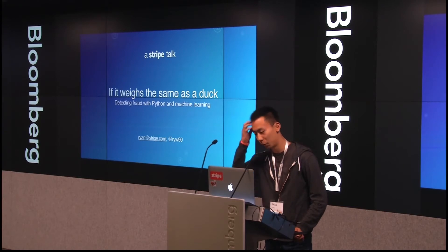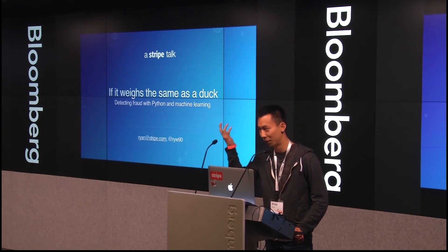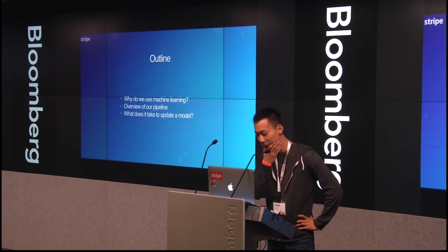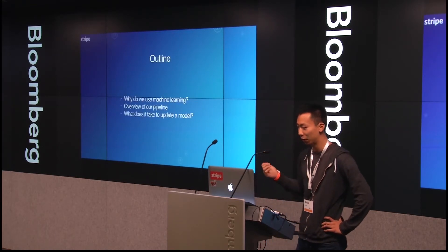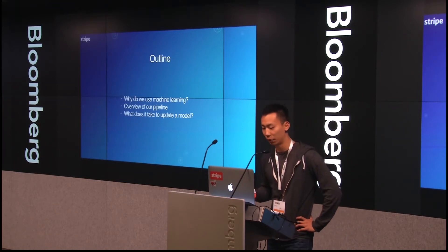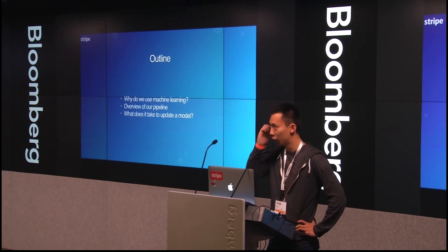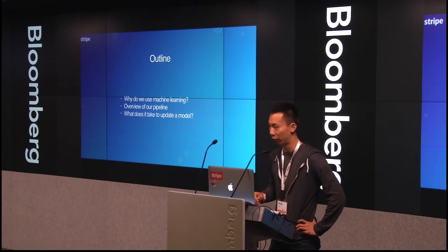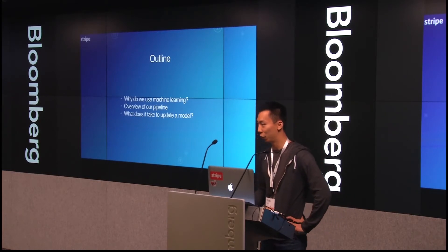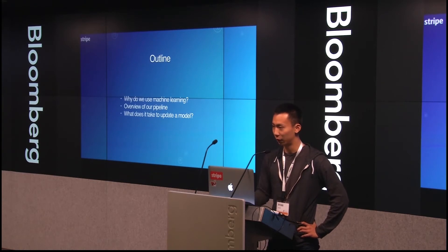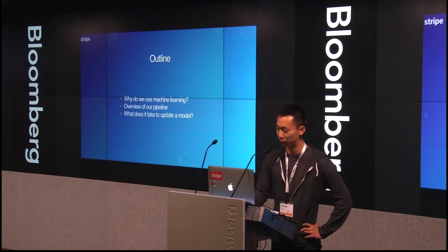I figured I had to throw in some Monty Python — if you've ever watched that scene, definitely should. The outline of this talk: first I'll talk about why we use machine learning in the first place for stopping fraud, then what our pipeline looks like, and then some war stories about what happened when we tried to update various models and the challenges we faced.